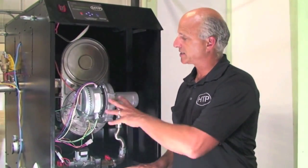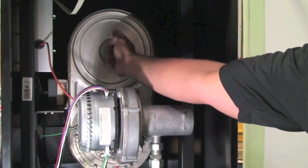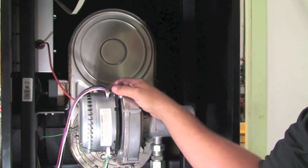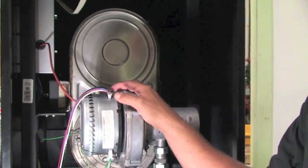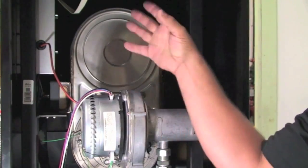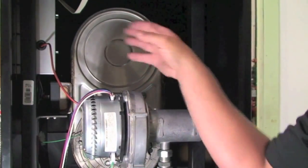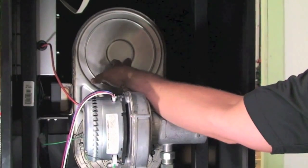Looking inside the ModCon double stacked units, you'll see the heat exchanger. The heat exchanger is obviously the key element to the efficiency. It's got multiple circuits in it and provides very good flow, very good heat transfer. One of the other things we've designed - you'll notice these heavy duty rail systems which the heat exchangers rest on.